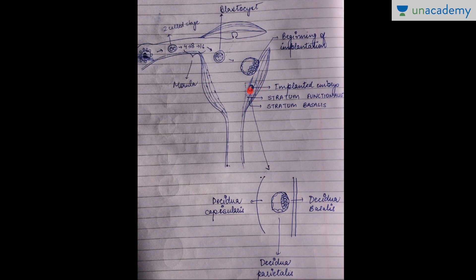The implanted embryo is fully implanted by the 7th day of fertilization. The endometrium is divided into two layers: stratum functionalis and stratum basalis. The embryo is implanted in the stratum functionalis. This layer is further divided into three regions: decidua capsularis, decidua parietalis, and decidua basalis.